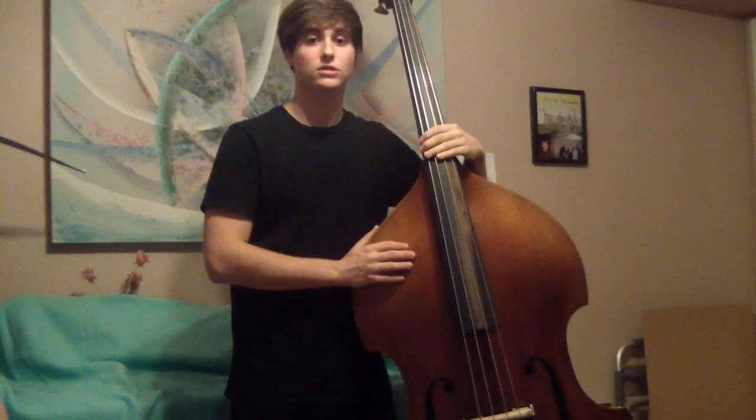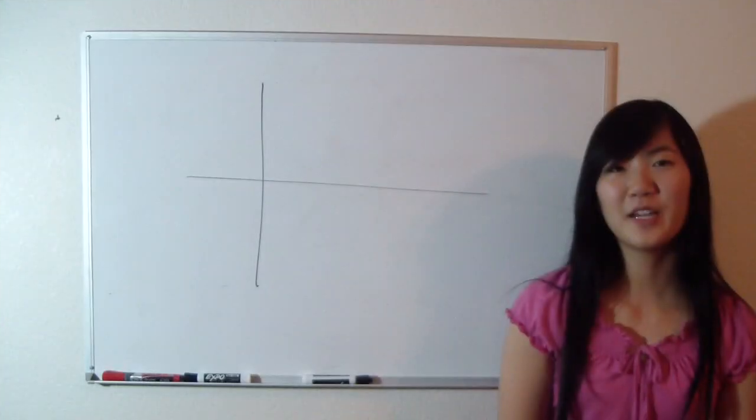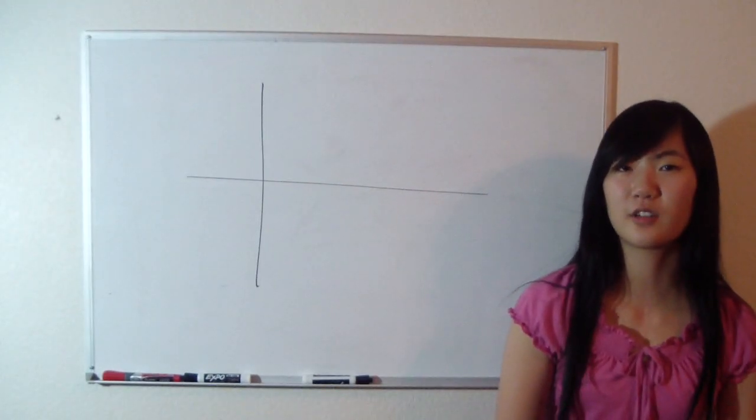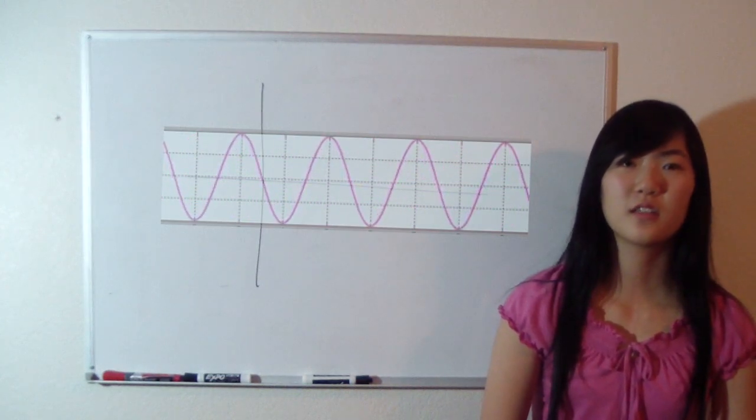These vibrations, or sound waves, then travel to our ears and are processed by our brains to hear pitches. The bass has the lowest sounding pitch in the stringed orchestra. This is because the frequency of the vibrations is lower, and the wavelength of the strings is longer.